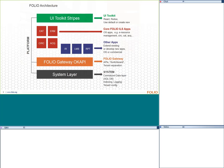Here's a slide about the FOLIO architecture. The platform has three layers: the bottom system layer, then the Okapi gateway where APIs and communication between different systems occur, and a UI toolkit. What we focus on in the Resource Management SIG is the apps that will be built onto that system layer using that gateway and toolkit.